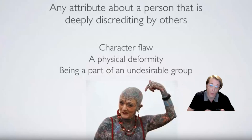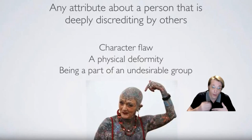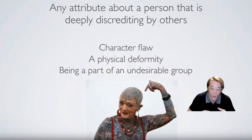Goffman stated: stigma is a process by which the reaction of others spoils normal identity. He approaches the study of deviance and stigma from a relational point of view. Goffman's definition of stigma is an attribute that is deeply discrediting. What is deeply discrediting and who decides is the question. That comes from what is socially acceptable and what is considered not. So if an attribute falls outside the norm, it may be socially discredited.